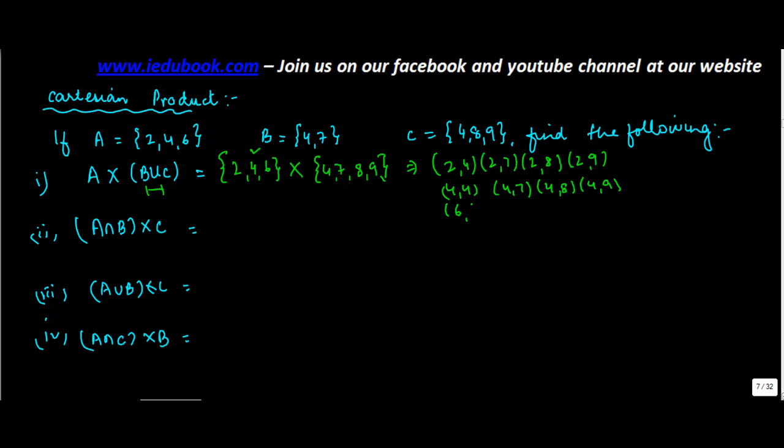And similarly, for 6, you get 6 with 4, 6 with 7, 6 with 8, and 6 with 9. So you have got the Cartesian product of A cross B union C.